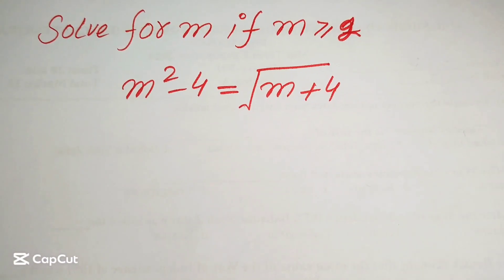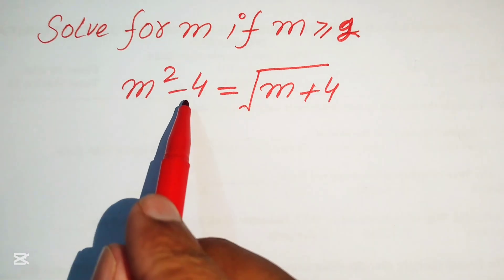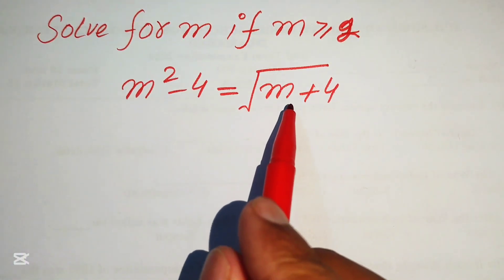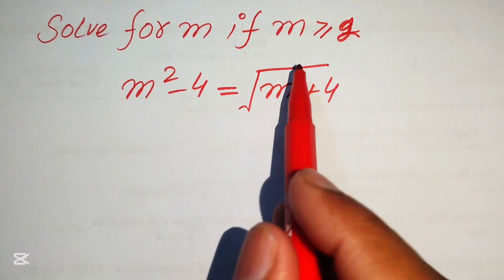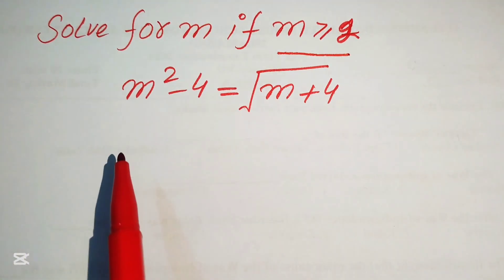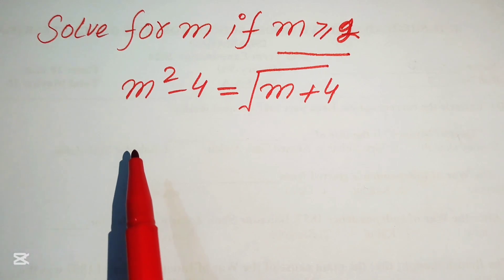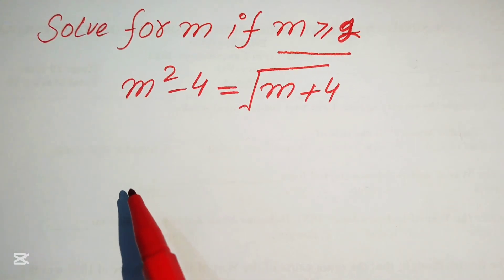Hello everyone, welcome. We are going to solve this math algebra problem: find the values of m if m squared minus 4 equals the square root of m plus 4. One restriction is that m must be greater than or equal to 2.